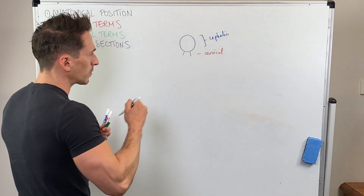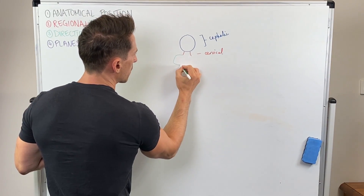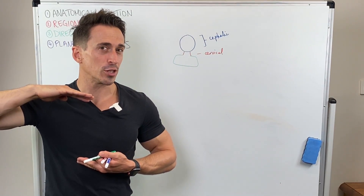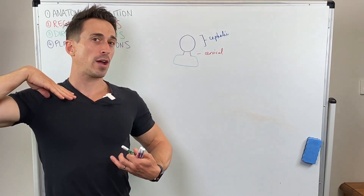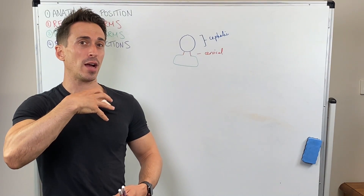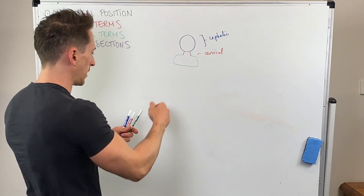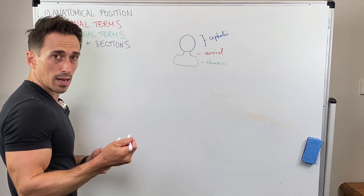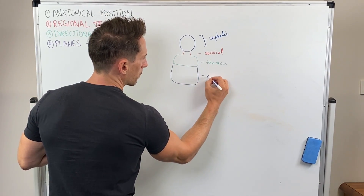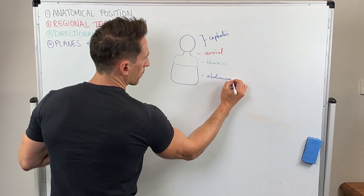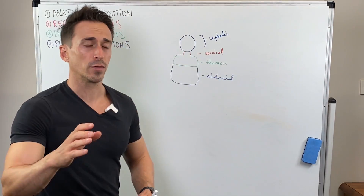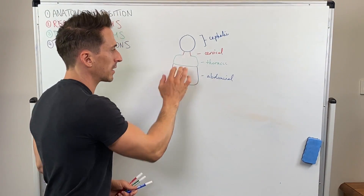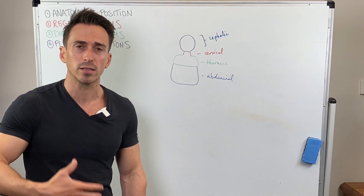Then we have the thoracic area. The thoracic region is from the neck to the diaphragm. The diaphragm is the anatomical barrier between the thoracic area and the abdominal area. So this is thoracic, which makes underneath it abdominal. In the thoracic area you're going to have things like your heart, your lungs, and some of the great vessels of your heart. For abdominal, this is where most of your gastrointestinal tract resides.